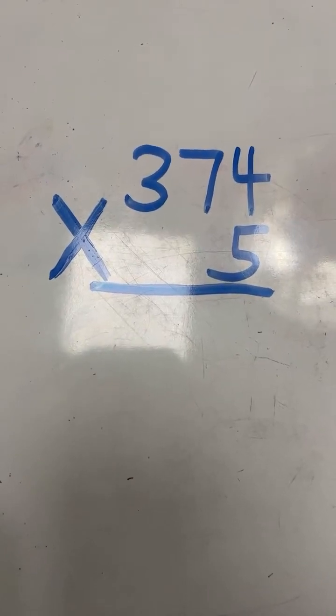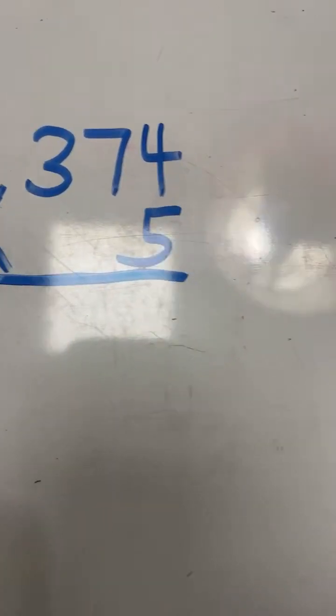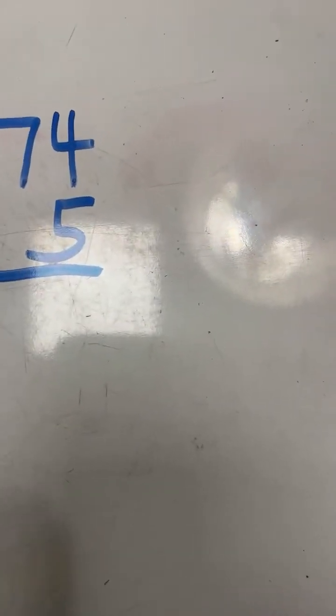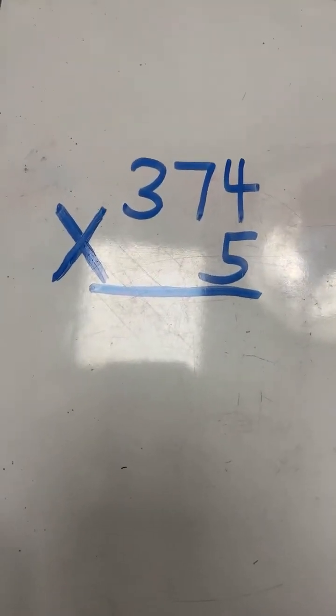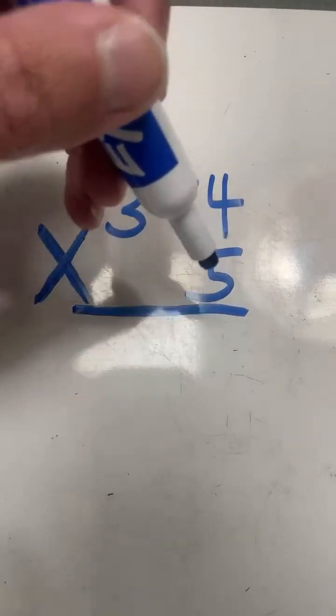So with multi-digit multiplication you always want to start in the ones place. So we're going to start out by multiplying 4 times 5. So 4 times 5 equals 20.